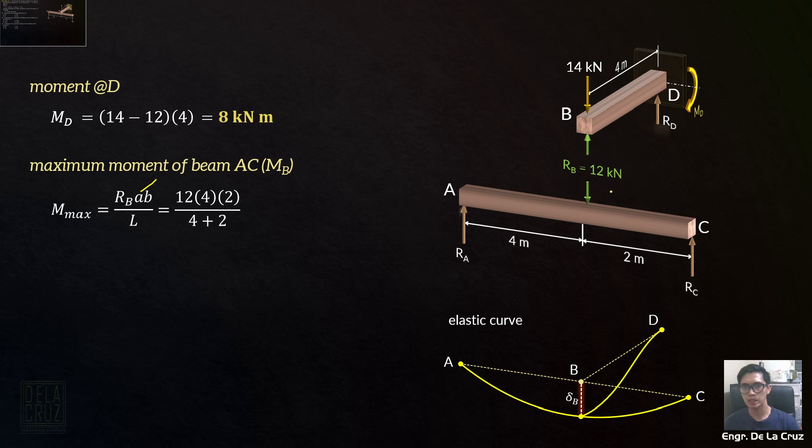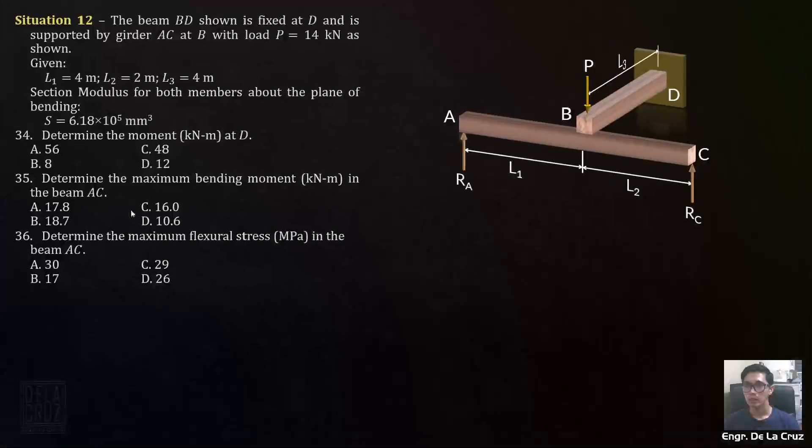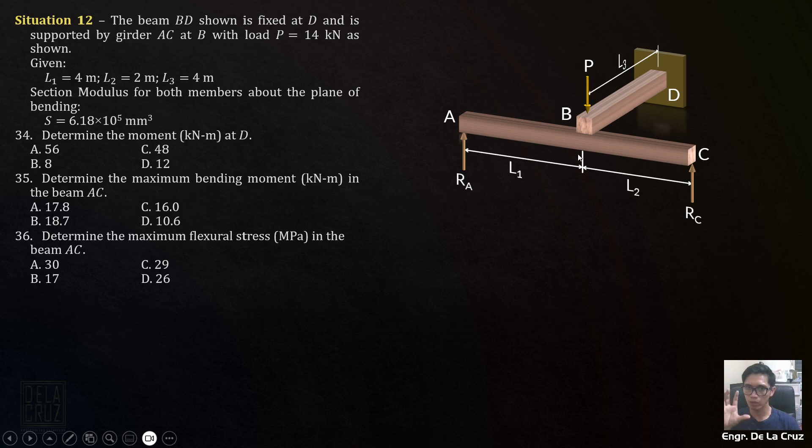So 12 kilonewtons, A is 4, B is 2 meters. L is the total length of the beam, so 4 plus 2. You have 16 kilonewton meter. That is letter C. Again, if you use P equals 14 kilonewtons directly, it will appear in the choices and you'll get it wrong.